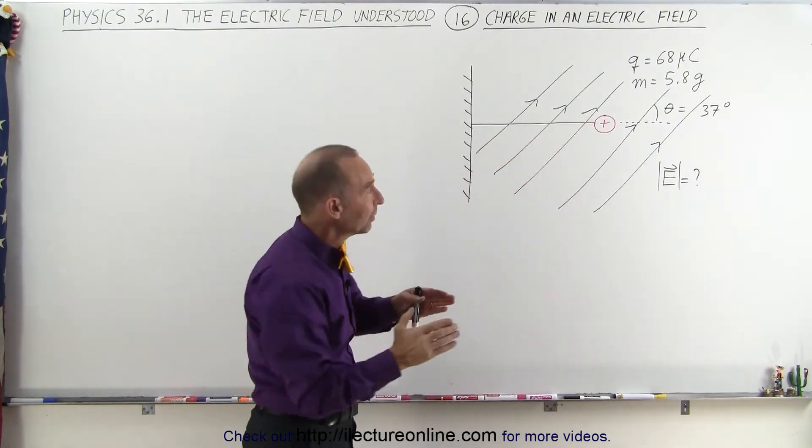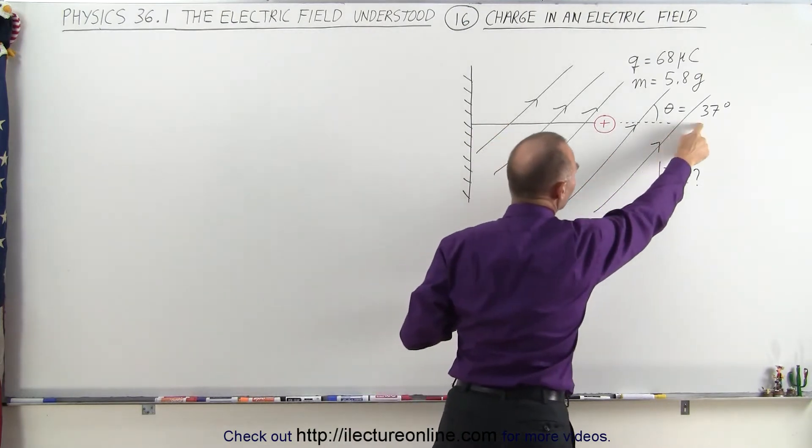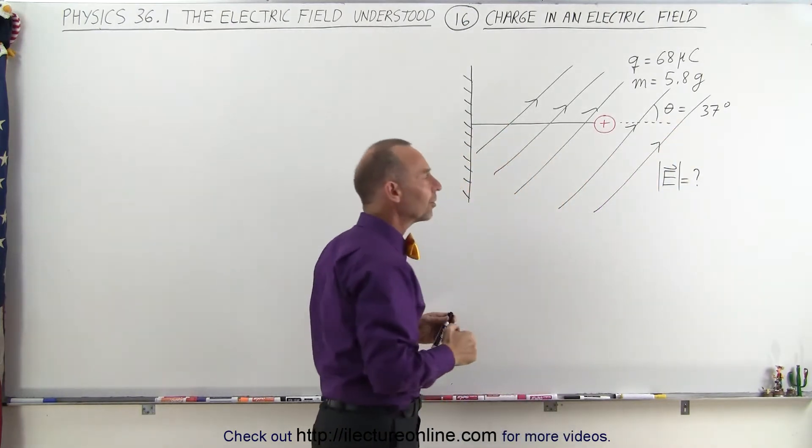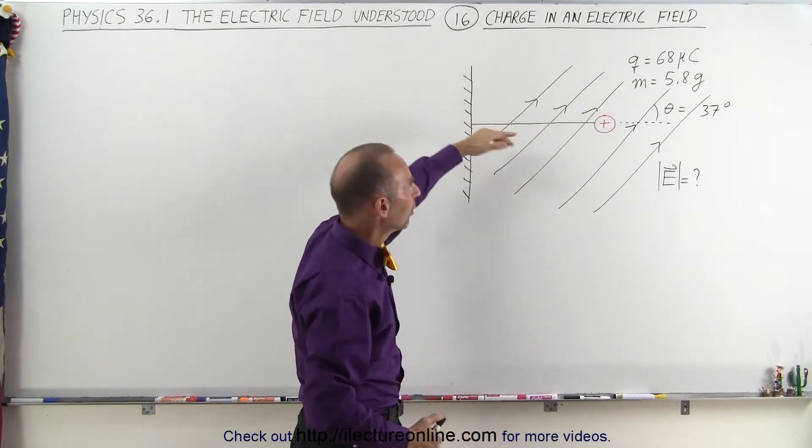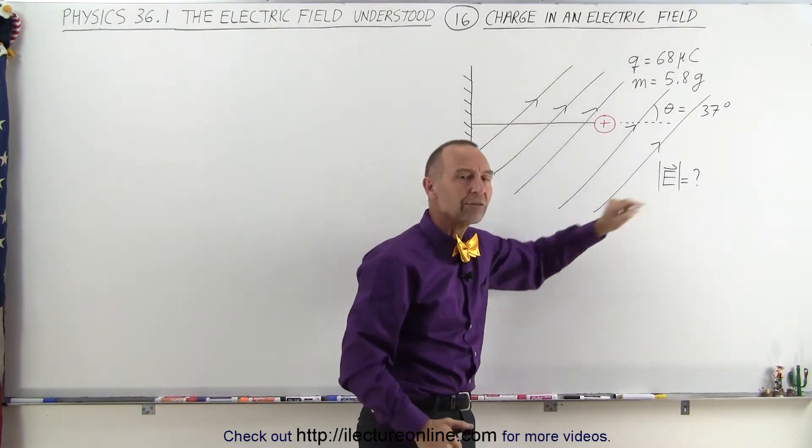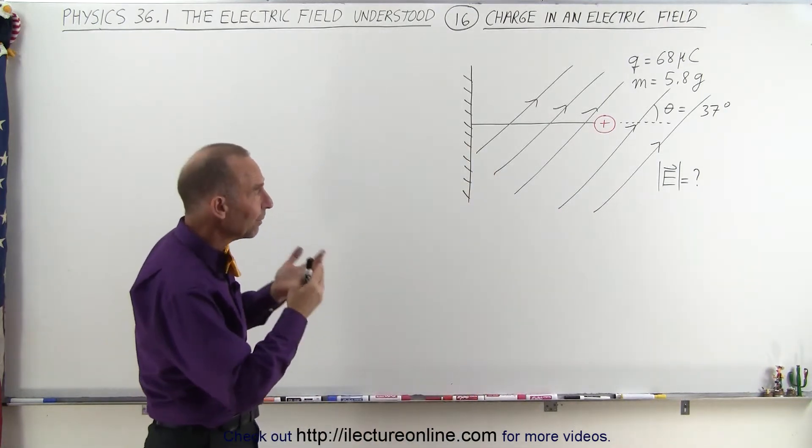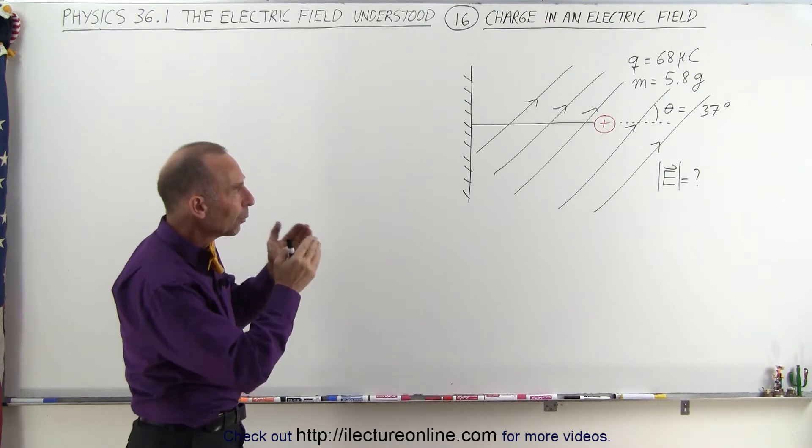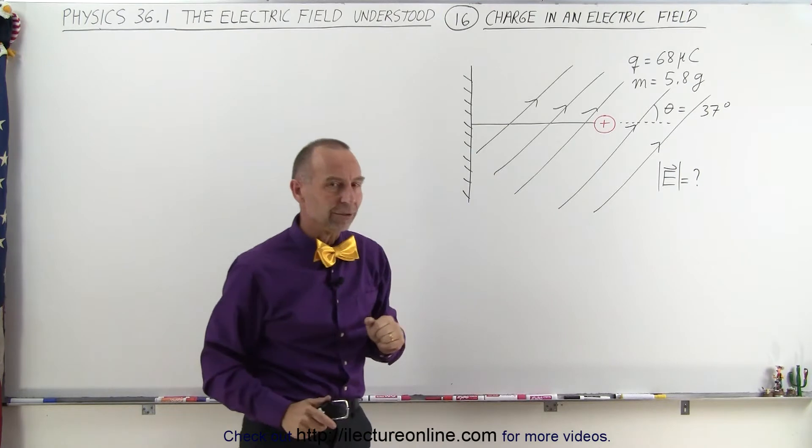There's an electric field that's directed at an angle upward. The angle is 37 degrees relative to the horizontal, and if the string is perfectly horizontal, what will be the strength of the electric field to make that happen? So that's what we're trying to find out. We're trying to find the magnitude of that field that will put that charge just so that the string will be perfectly horizontal.